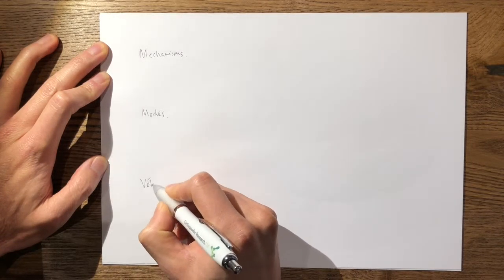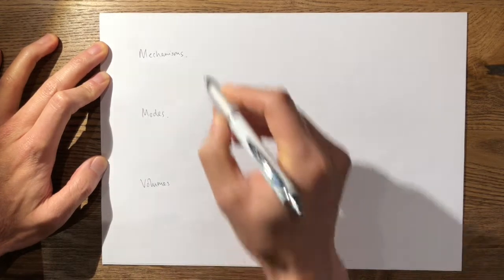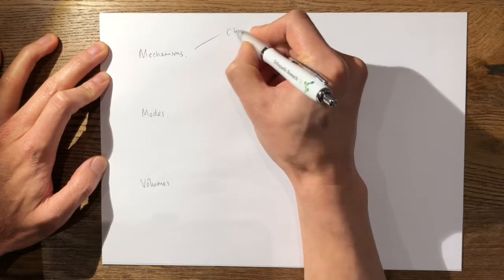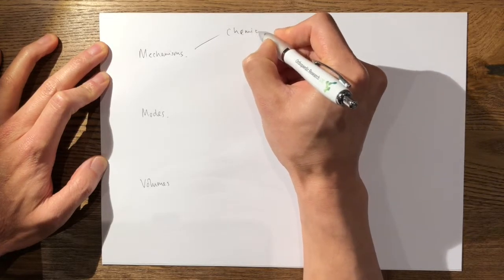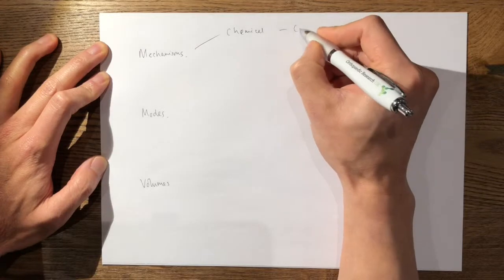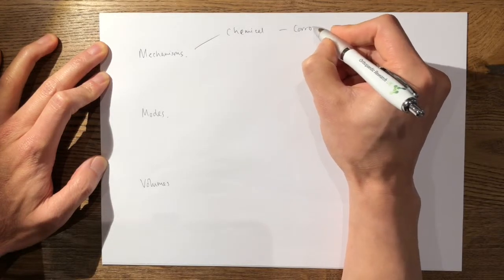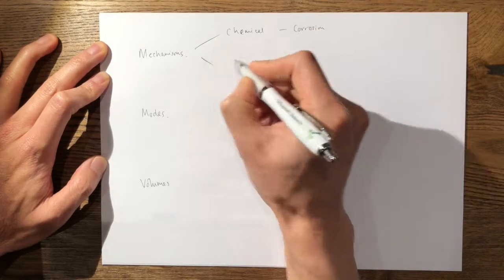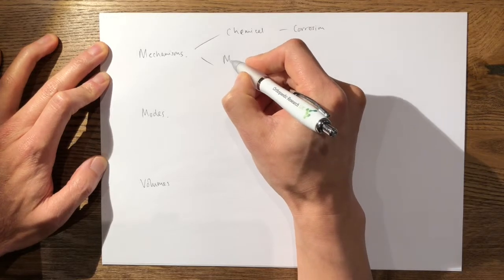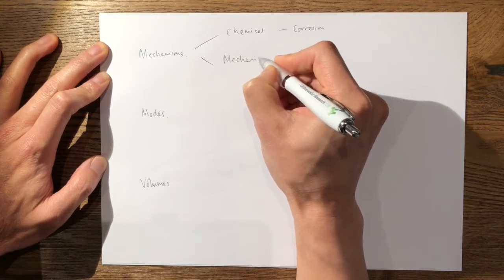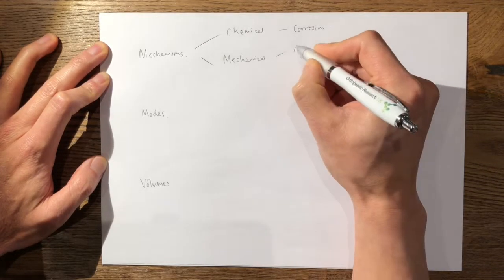Your mechanisms of wear can largely be divided into chemical, which is your corrosive type—so your corrosion—or your mechanical mechanisms of wear. In your mechanical, you can talk about abrasive and adhesive wear.